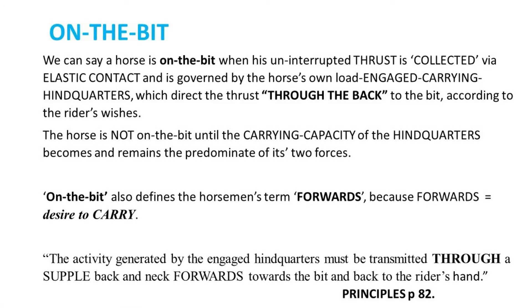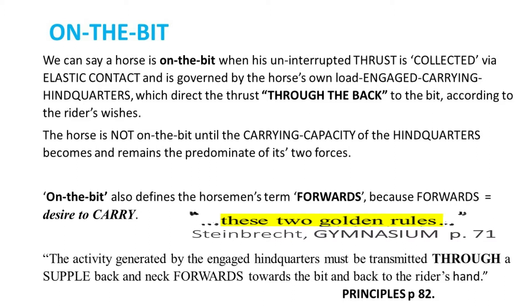Now we have enough background terminology to clearly define on the bit. We can say a horse is on the bit when his uninterrupted thrust is collected via elastic contact and is governed by the horse's own load-engaged carrying hindquarters, which direct the thrust through the back to the bit, according to the rider's wishes. The horse is not on the bit until the carrying capacity of the hindquarters becomes and remains the predominant of its two forces. A horse that is only on contact with only thrust is not on the bit. On the bit also defines the horseman's term forwards, because forwards equals the desire to carry.